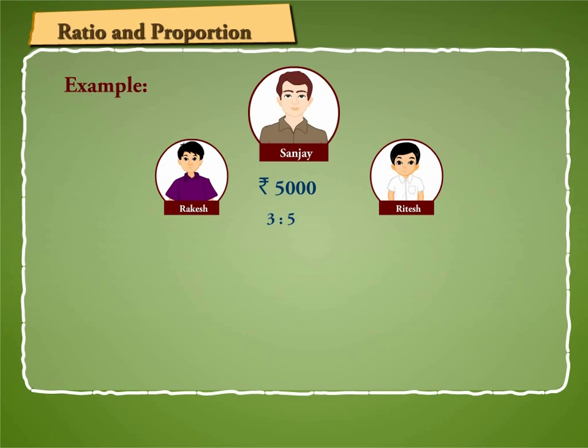We know that Rakesh's share is to Ritesh's share is equal to 3 is to 5. Sum of the terms of the ratio is equal to 3 plus 5 is equal to 8.